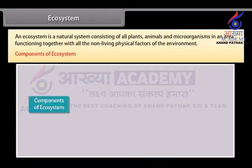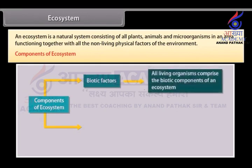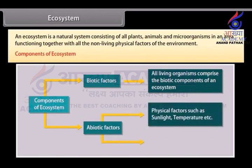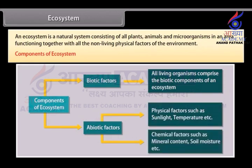Components of ecosystem: An ecosystem comprises the following two components. 1. Biotic factors, including all living organisms. 2. Abiotic factors, that include physical factors such as sunlight and temperature, and chemical factors such as mineral content, soil moisture, etc.